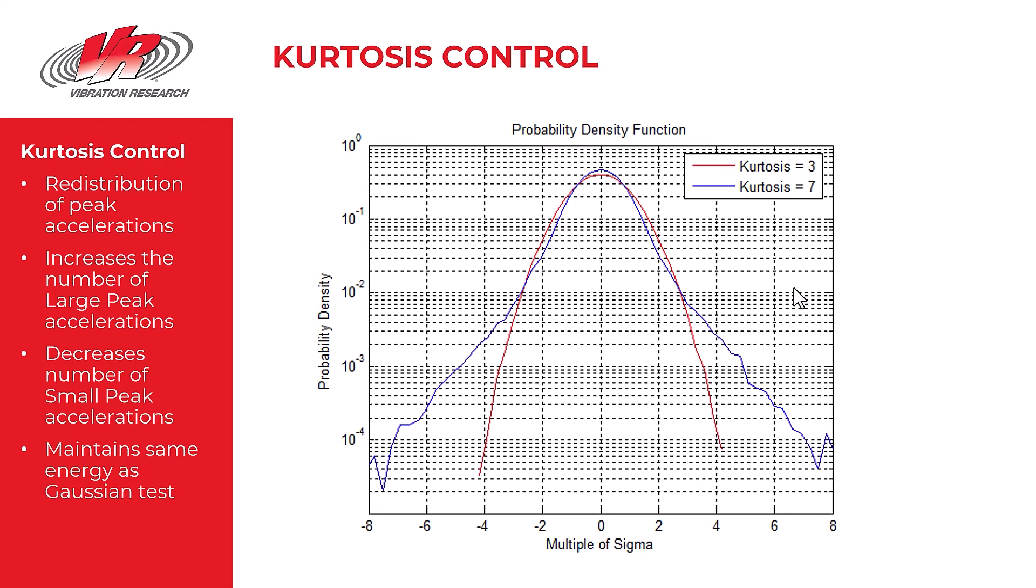In this probability density function we see a red plot which is a Gaussian distribution. It's symmetrical around the mean and it has what we call a kurtosis of 3.